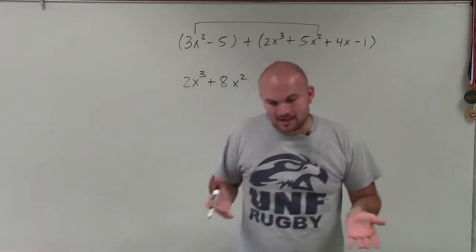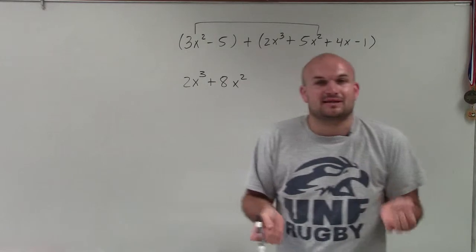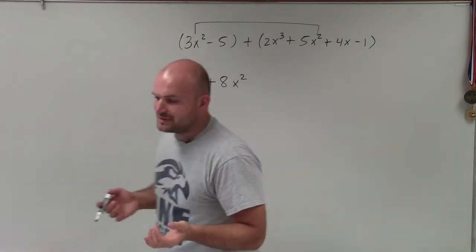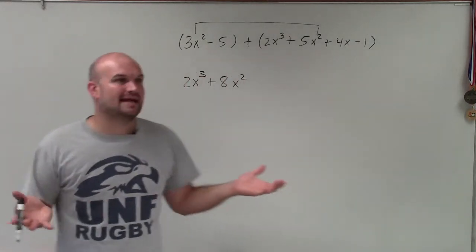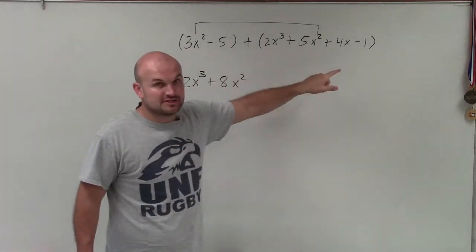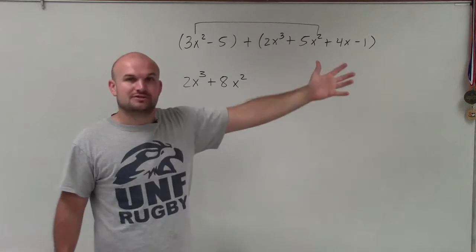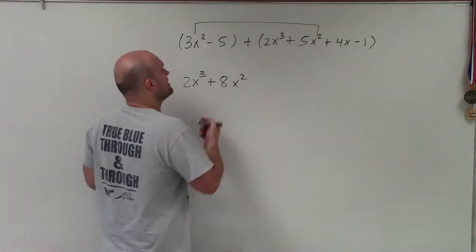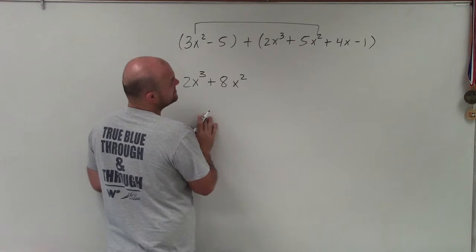And a lot of times, we use the idea of bananas or apples or oranges. If you have 3 oranges plus 5 oranges, then you have 8 oranges, right? It's the same process. 3x squared plus 5x squared is going to be 8x squared.